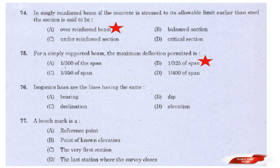Question: Isogonic lines are the lines having the same — options: Bearing, Dip, Declination, Elevation. Answer: Option C — Declination. Isogonic lines are lines having the same declination.